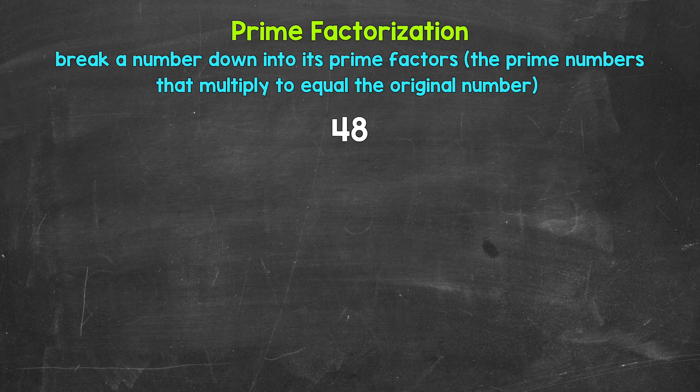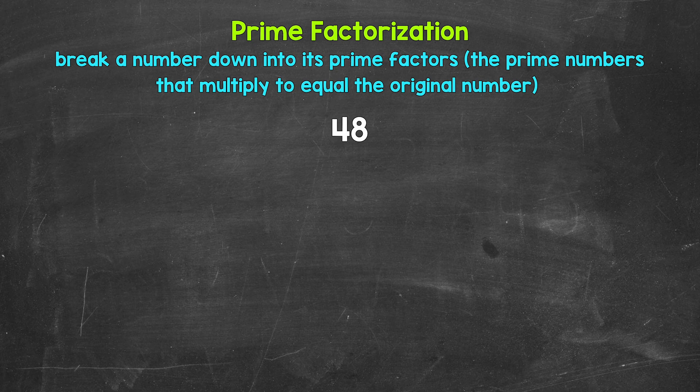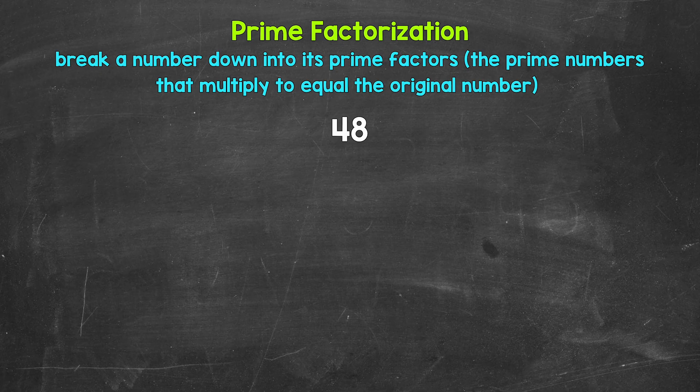So looking at 48, we need to start breaking this down by thinking of two factors, two numbers that will multiply to give us 48. Well, 6 and 8 are factors of 48. 6 times 8 equals 48. So let's break 48 down into 6 and 8.